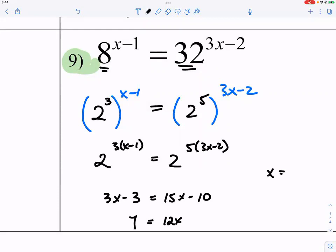So x is equal to 7 over 12. Okay, so that's the level two kind of question.